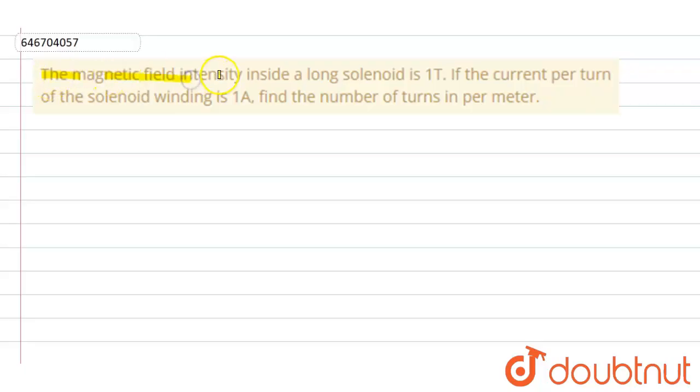The magnetic field intensity inside a long solenoid is one tesla. If the current per turn of the solenoid winding is one ampere, find the number of turns per meter. Here the magnetic intensity is given, that is one tesla inside a solenoid.